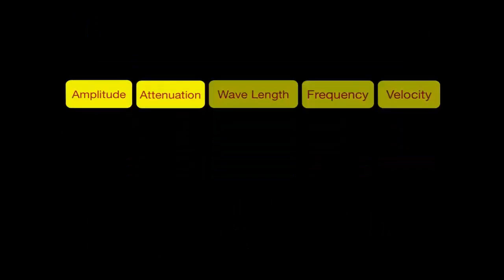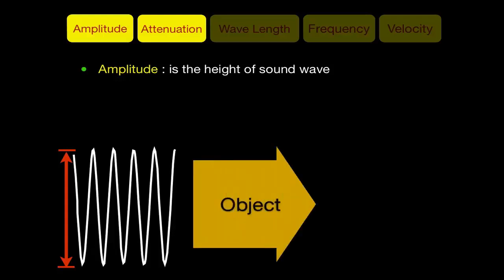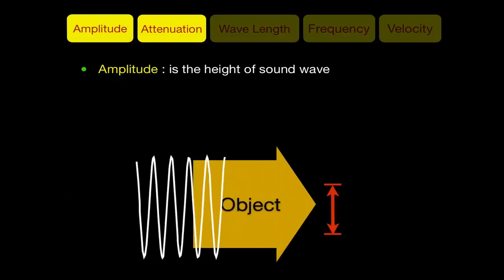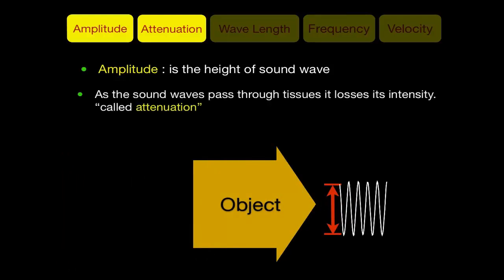Amplitude simply is the height of the sound wave, or how loud or intense the sound wave is. If the sound wave passes through an object, the amplitude will decrease — this is what we call attenuation. Depending on the type of object, if it is a highly attenuating material, the amplitude will decrease to a significant degree.